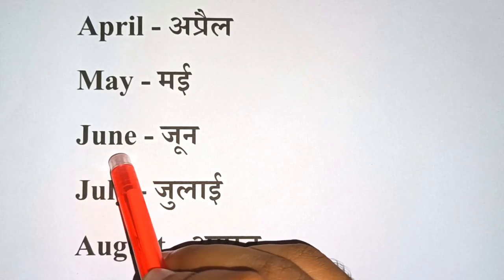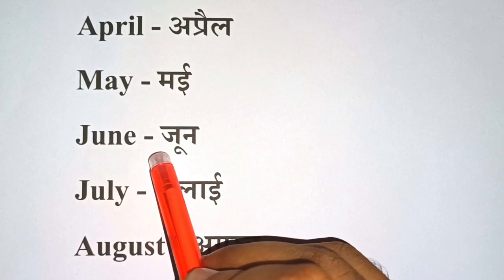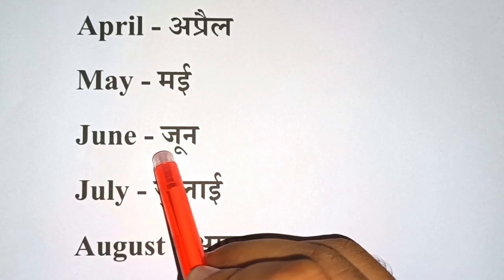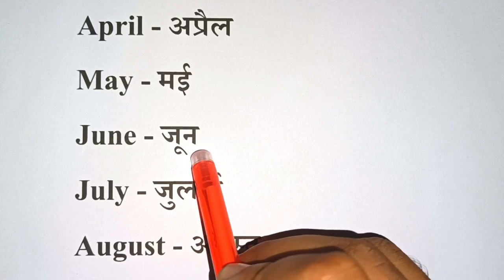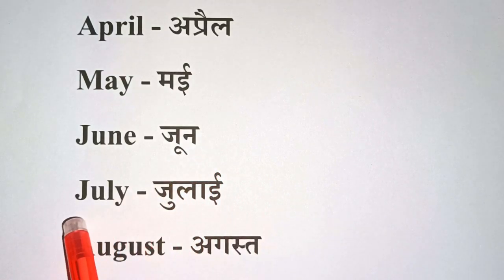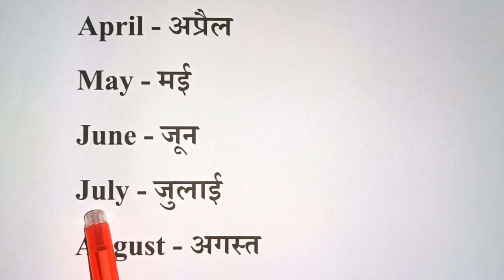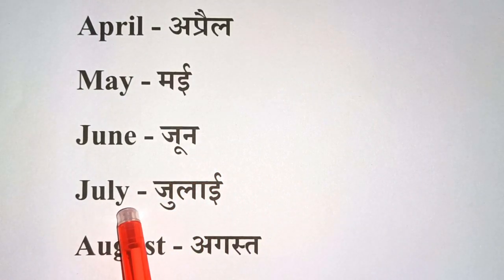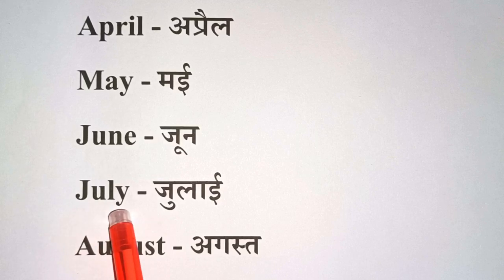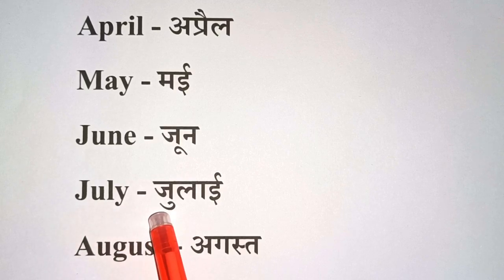June. June means June. J-U-L-Y. July. July means July.